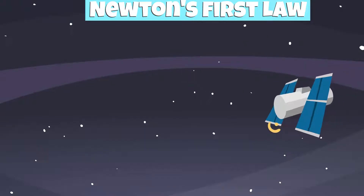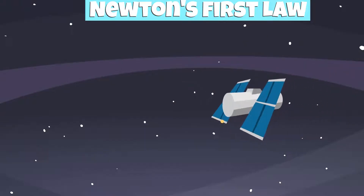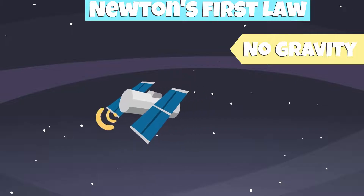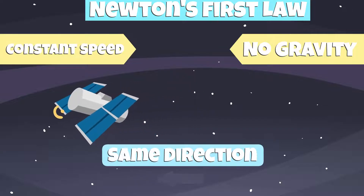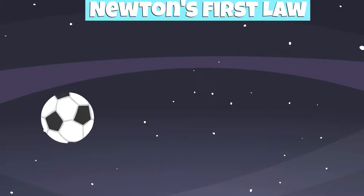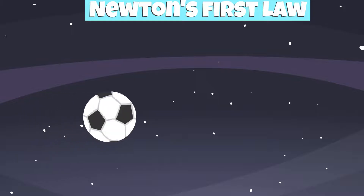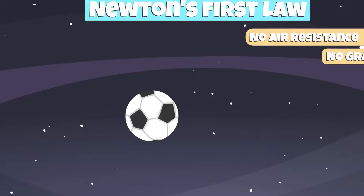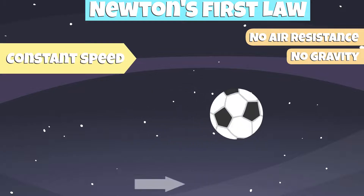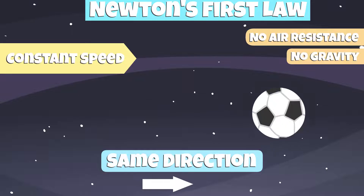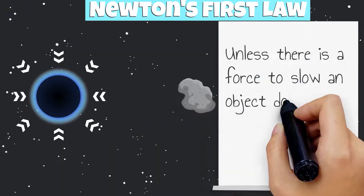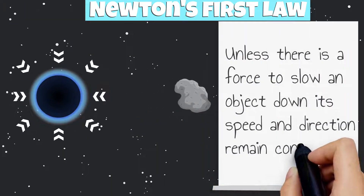For example, an object traveling in a vacuum where there is no gravity would continue to travel at a constant speed and in the same direction. Let's pretend a ball is kicked in outer space where there is no force, such as air resistance and gravity. The ball would continue to travel at a constant speed and in the same direction. Unless there is a force to slow an object down, its speed and direction remain constant.